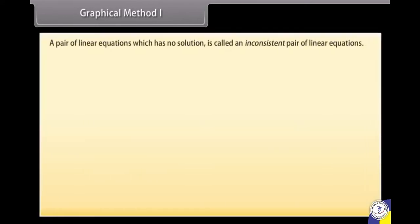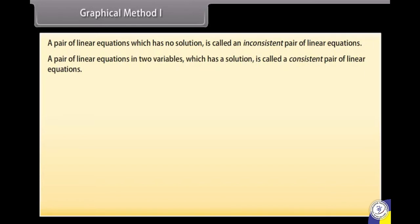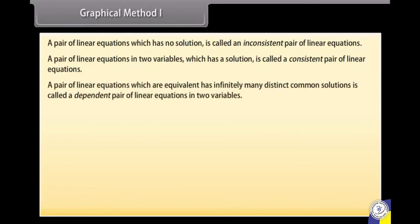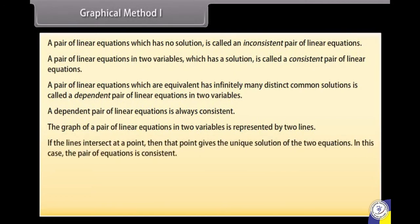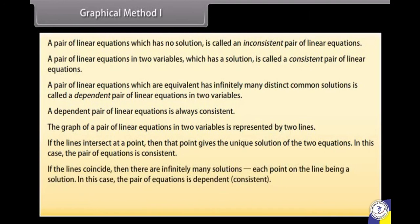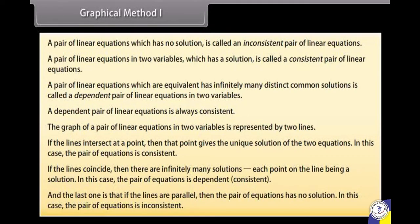Graphical method. A pair of linear equations which has no solution is called an inconsistent pair. A pair which has a solution is called a consistent pair. A pair which has infinitely many distinct common solutions is called a dependent pair, and a dependent pair is always consistent. The graph is represented by two lines: if lines intersect at a point, the pair is consistent with a unique solution; if lines coincide, the pair is dependent and consistent with infinitely many solutions; if lines are parallel, the pair is inconsistent with no solution.